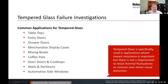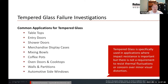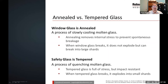Specifically shower doors: everybody has a bathtub or a shower, and there is a huge number of shower door installations in the US. There were 2,300 cases of injuries involving glass shower doors. We also see failure in entry doors, mixing bowls, oven doors, walls and partitions, and even automotive side windows.